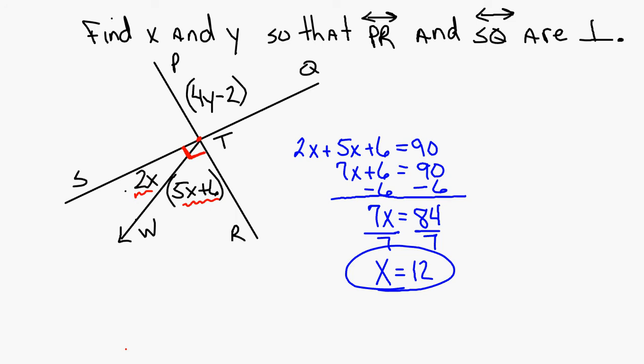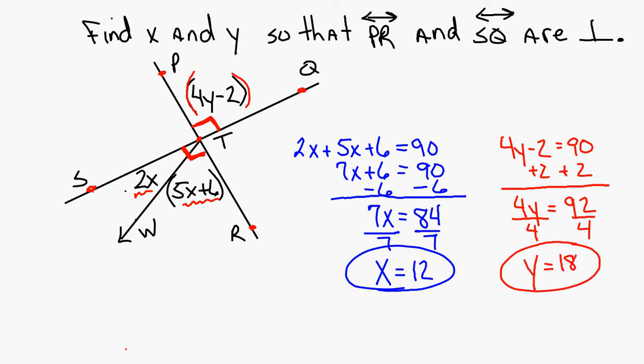Now in this diagram, if angle STR equals 90 degrees, what's the measure of PTQ? Why? What are those angles called? What is this angle, PTQ and STR called? They're vertical angles. And if STR is 90, then PTQ is 90 because vertical angles are congruent. So to solve for y, your 4y minus 2 is equal to 90. So you can add 2 to each side. 4y equals 92. And divide by 4. Y equals 23.